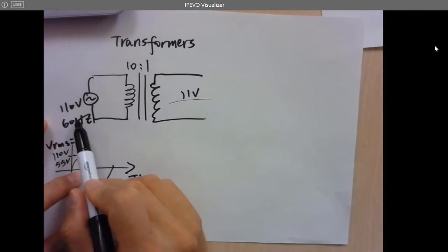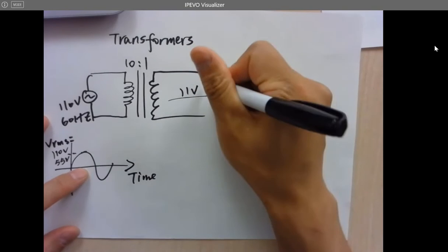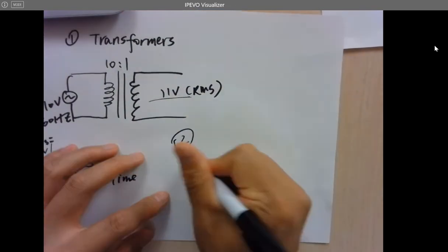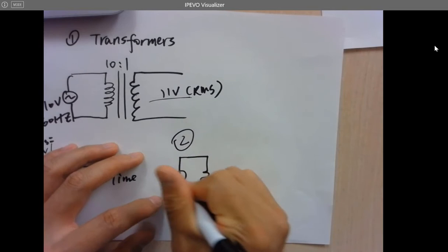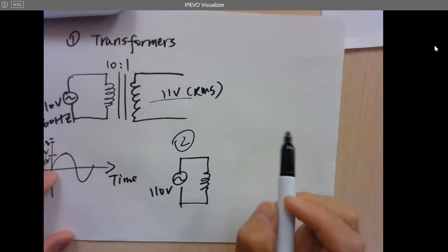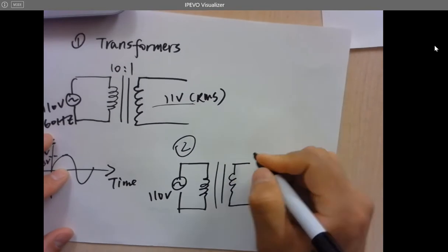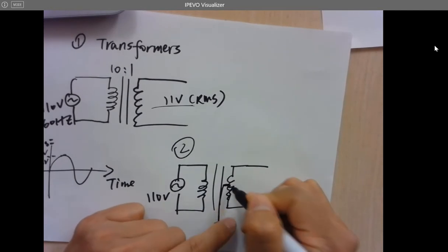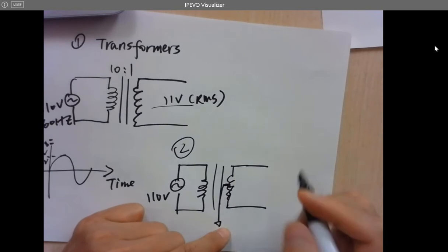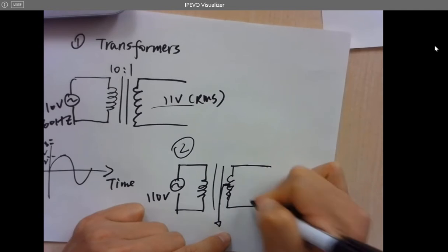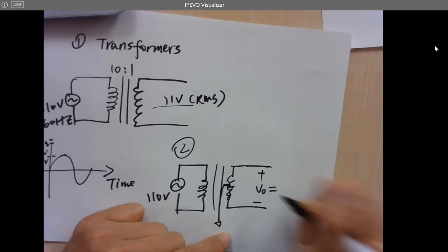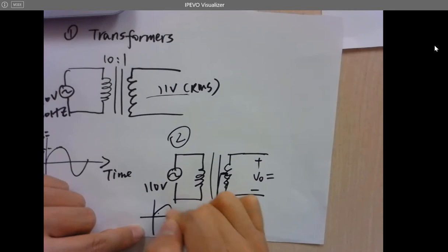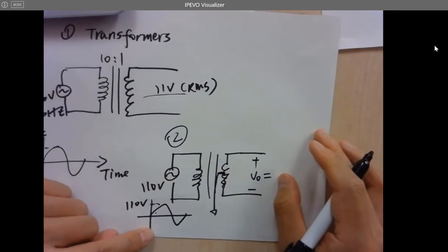So here you got 11 volts, which is also RMS. Now if I have a transformer with 100 turns and I ground the middle — the center tap — grounding right at the middle of this coil, then what's the voltage swing here? Still RMS. We are talking about 110 volts RMS.